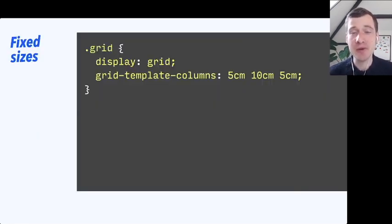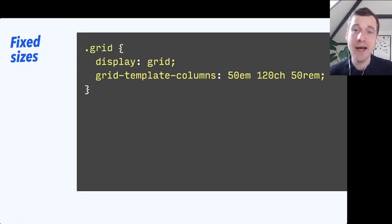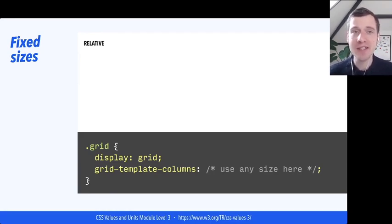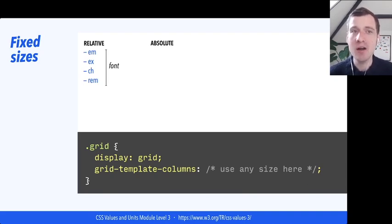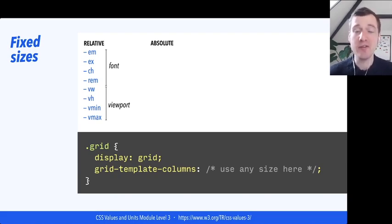The most straightforward sizing for grid tracks is fixed sizing. When we use any fixed sizing methods, we could do something in centimeters — five, ten and five centimeters — or pixels, or a mixture of things like ems, rems, and ch units. With fixed sizing, you are going to get the size that you've asked for. There are many different sizing units: relative sizing (relative to the font like em and rem, ex and ch, or relative to the viewport like vw and vh), and vmin and vmax which refer to whichever part of the viewport is biggest or smallest.